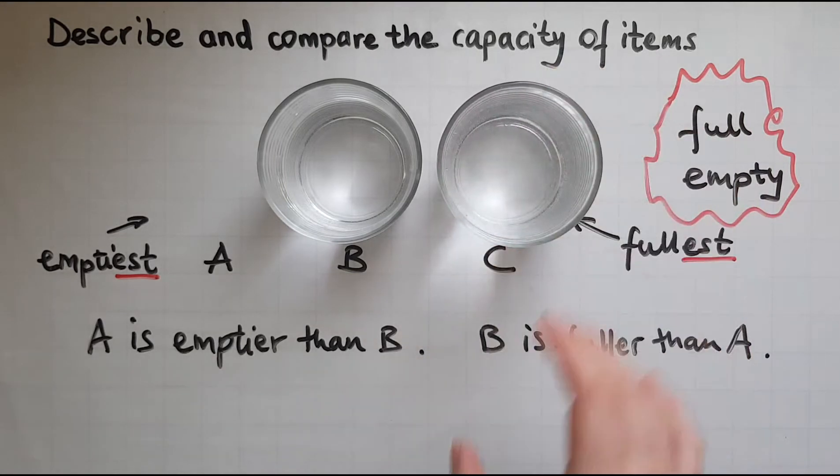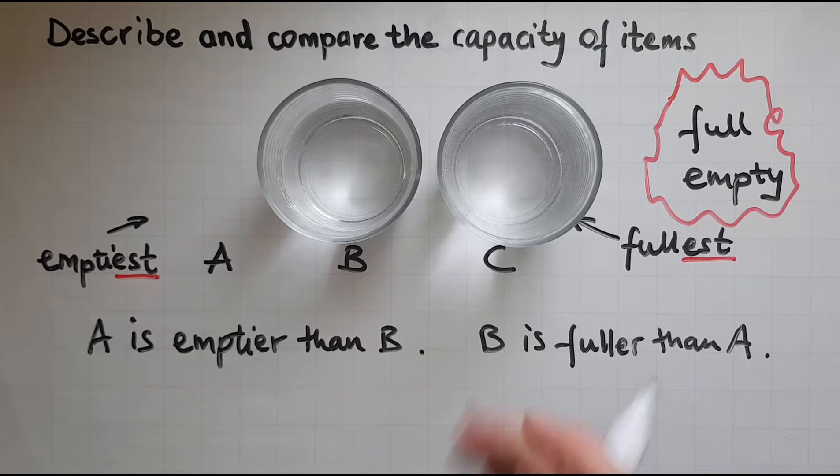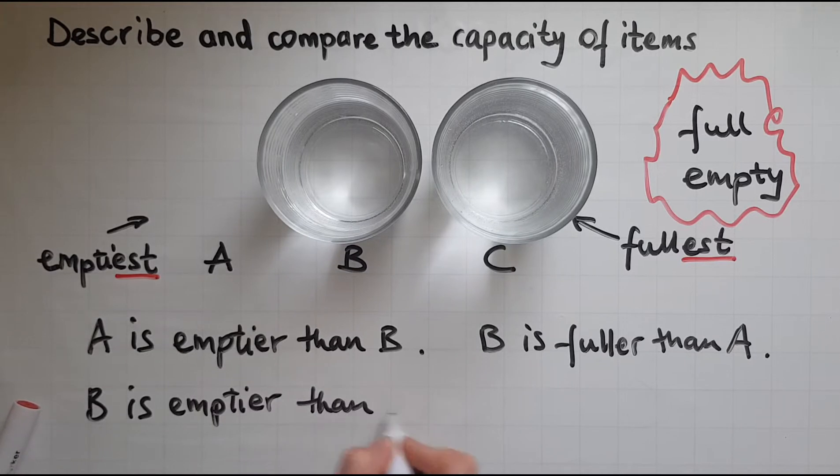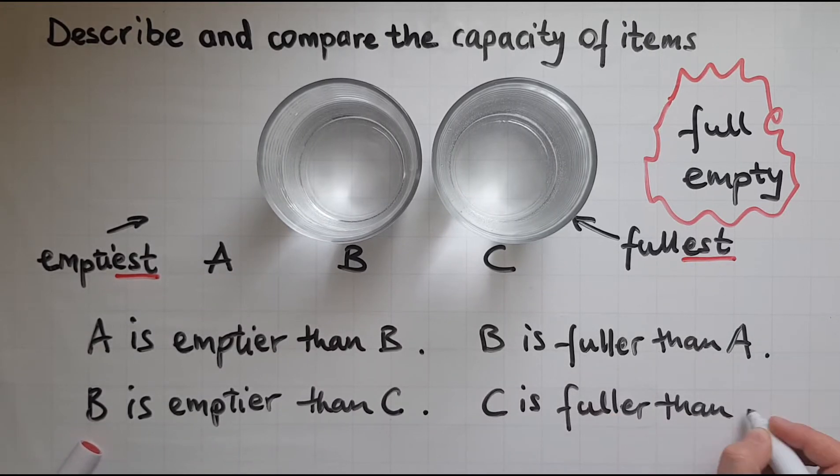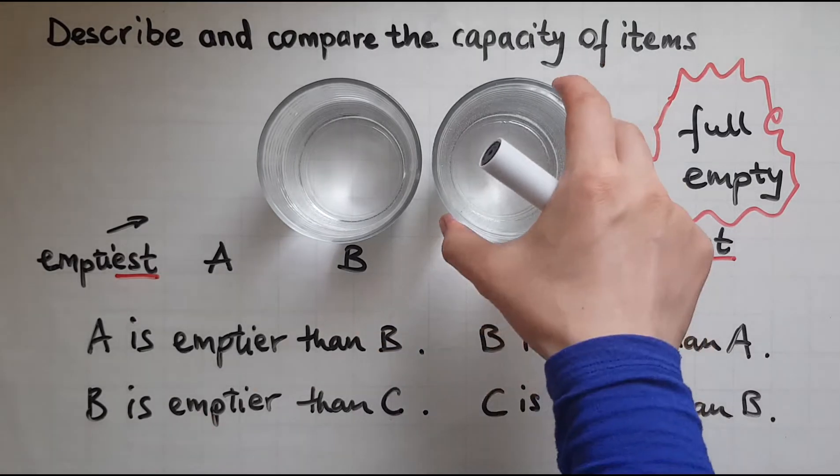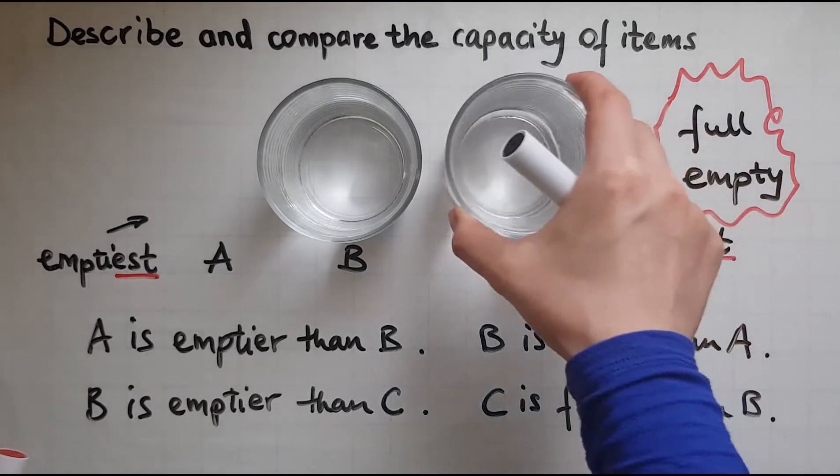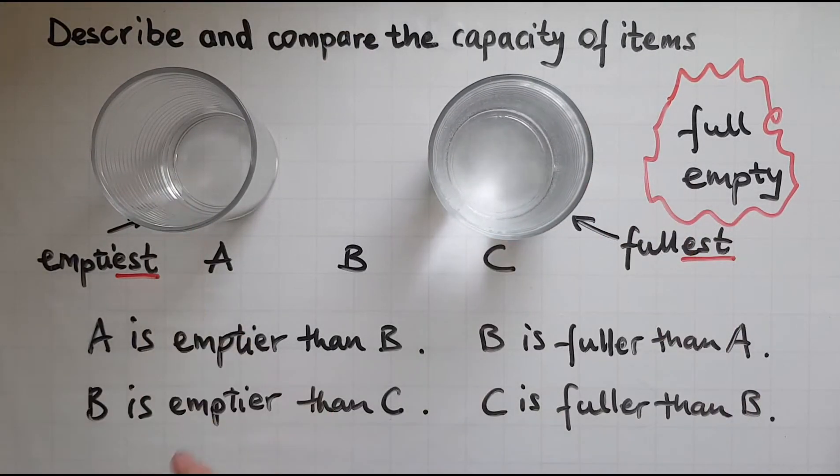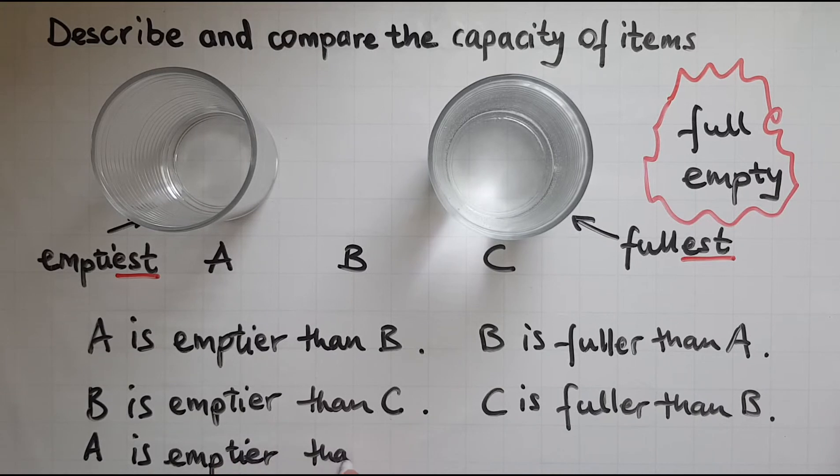Now let's compare B with C. Since there is more water in C, B is emptier than C. C is fuller than B. And now comparing A with C: A is emptier than C. C is fuller than A.